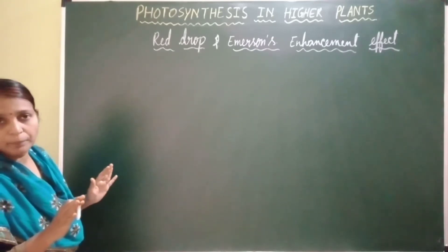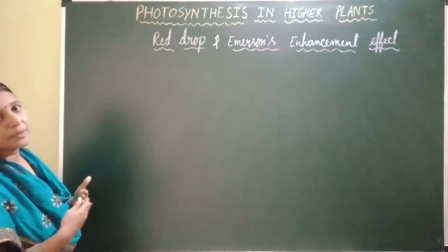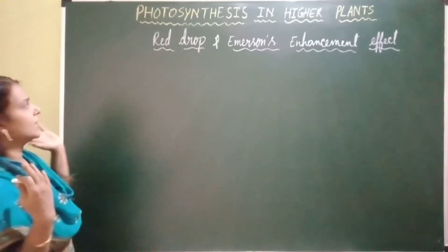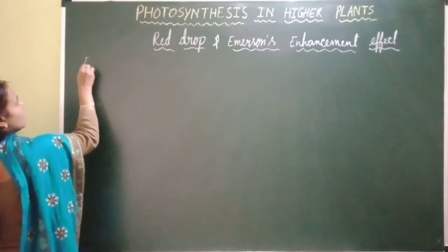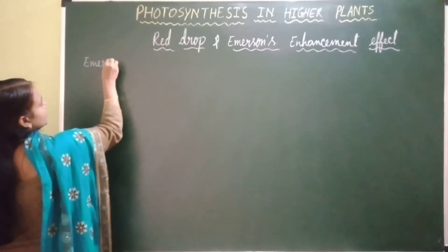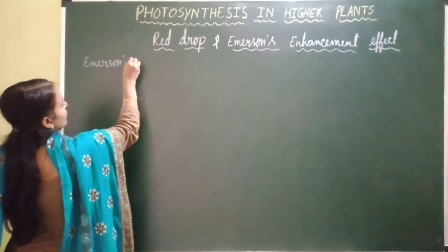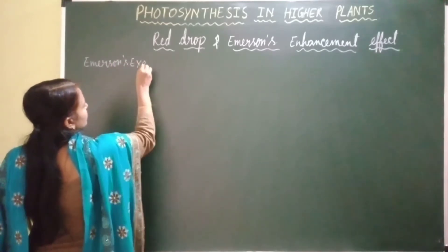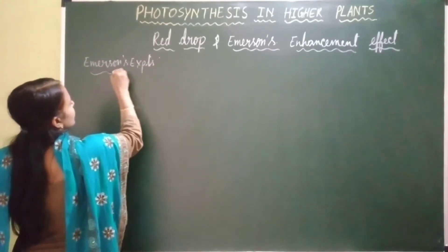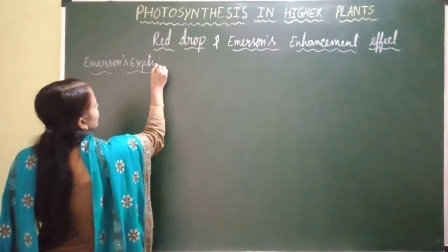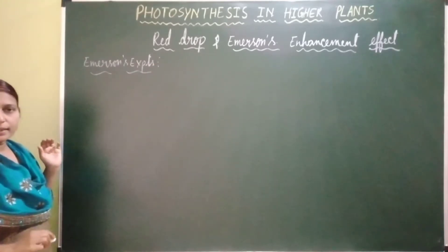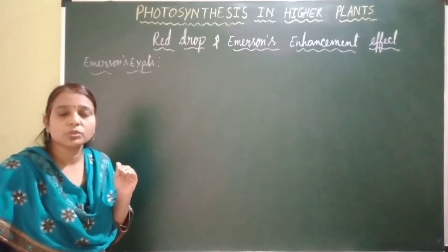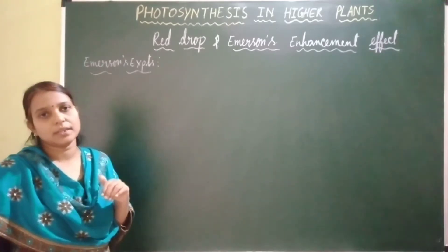Based on these experiments he gave these concepts: red drop and Emerson's enhancement effect. So Emerson studied the effect of monochromatic light of different wavelengths on the photosynthetic activity of Chlorella.